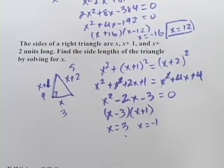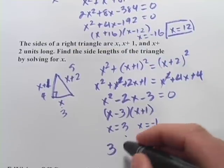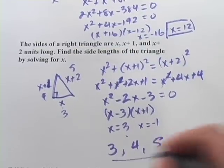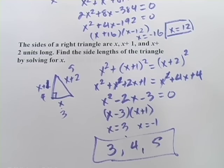We've got a 3, 4, 5 triangle. And that is the answer, 3, 4, and 5 for the sides of the triangle.